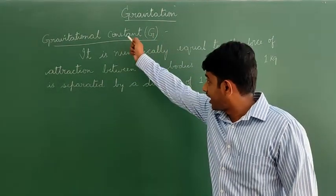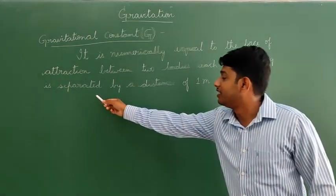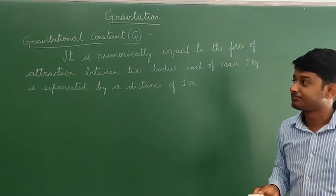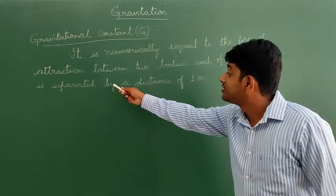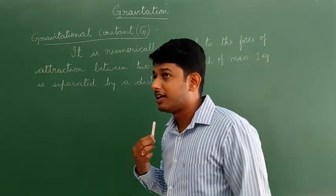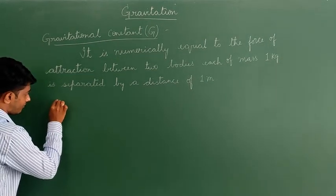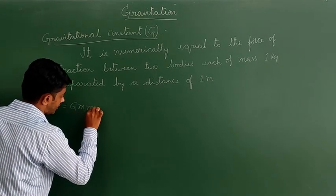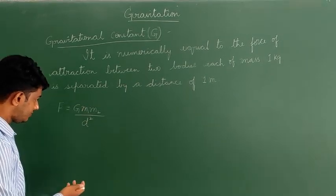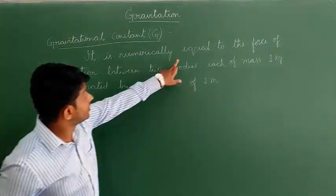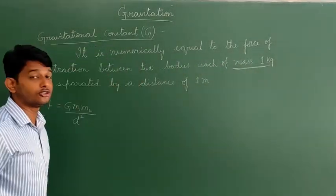This gravitational constant G is numerically equal to the force of attraction between two bodies, each of mass 1 kg, separated by a distance of 1 meter. Using the expression from the universal law of gravitation — F equals G·M1·M2 divided by d² — according to this statement, both M1 and M2 should equal 1 kg.